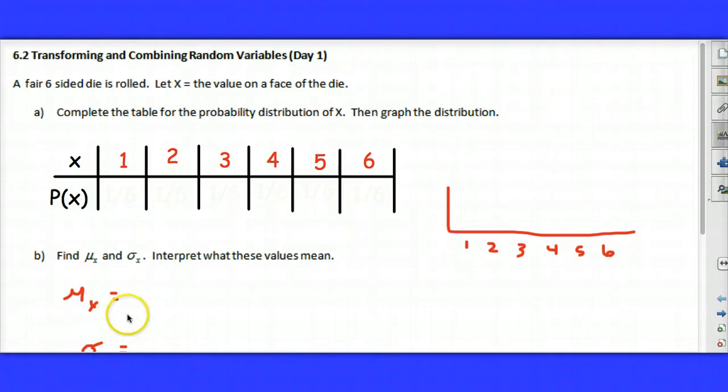Here we have something I talked about yesterday, rolling a fair six-sided die. The values that x can take on are 1 through 6, and the probability of each of these values occurring is 1/6. So if we actually draw the distribution, we have a uniform distribution, since each value occurs with the same frequency of 1/6.